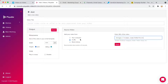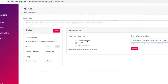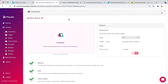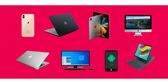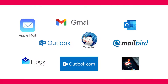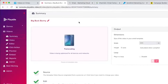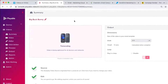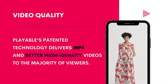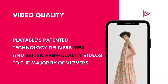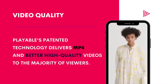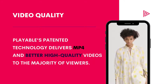Or if you have the original source video file, you can also upload that. Playable will create all the different versions of the video needed to play on all devices, email clients, different screen resolutions, or network conditions. Playable's patented technology delivers MP4 and better high quality video to the majority of viewers.